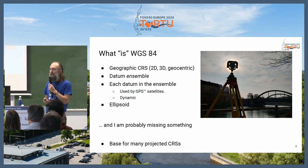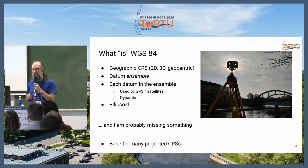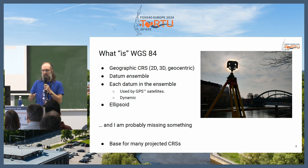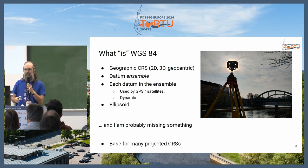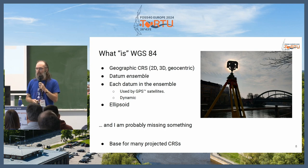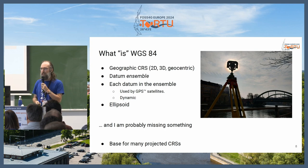First, what is WGS84? It is the name of a geographic coordinate reference system — in three flavors: 2D, 3D, and geocentric. It is also the name of a datum, specifically a datum ensemble. And it's also the name of each of the members of this datum ensemble. This datum is used by the GPS satellites — the actual GPS constellation from the US, not GNSS in general. And it's also the name of an ellipsoid.